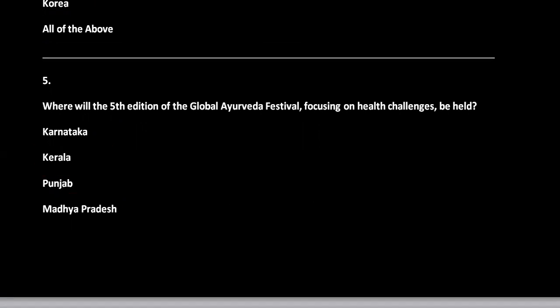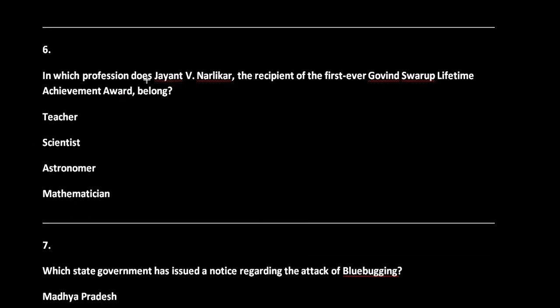Question 6: Jayant V. Narlikar is the recipient of the first ever Gobind Swarup Lifetime Achievement Award. What is his profession? Options are teacher, scientist, astronomer, and mathematician. The correct answer is option C, that is astronomer. Professor Jayant V. Narlikar is an eminent astronomer honored by the Astronomical Society of India.